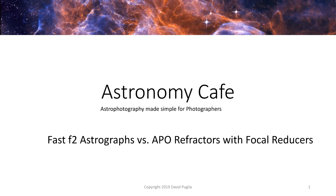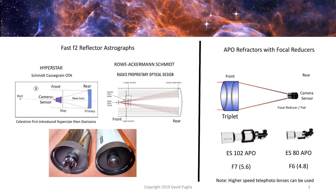Welcome back. Today we're going to be talking about the difference between an F2 astrograph versus an APO refractor with focal reducers for deep sky imaging. There are a lot of other designs out there, but these are the most popular and we want to focus on these because these are the ones we have in the observatory.